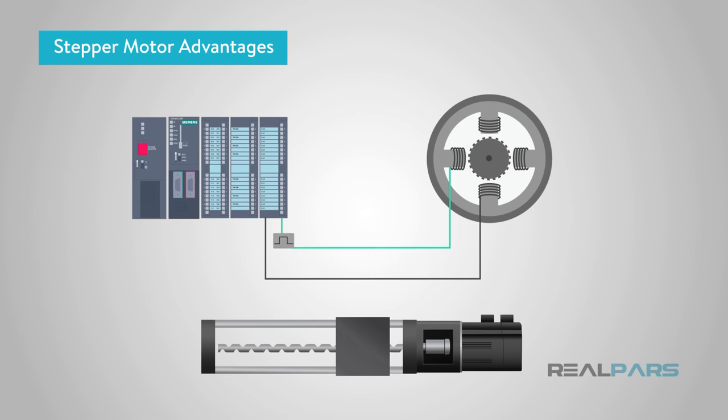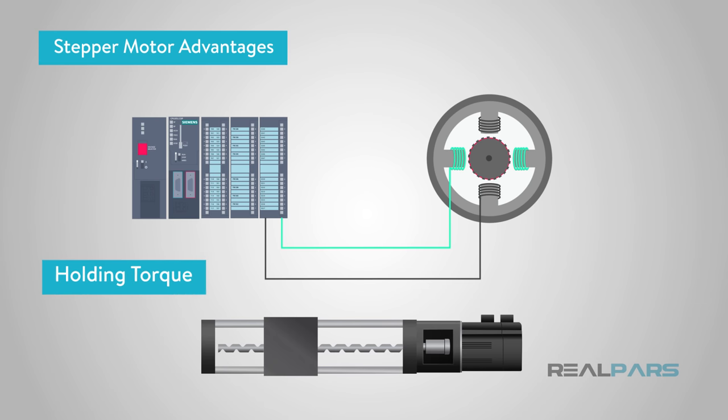One of the many stepper motor advantages is a feature providing full torque at standstill, while the windings are energized, and the rotor is stationary. Or in other words, a benefit we call holding torque, which means the motor can hold the load in place when the rotor is not rotating. But a stepper motor can also hold a load in place when there is no current applied to the windings, or in a power-off condition. This is commonly known as the detent torque or residual torque.